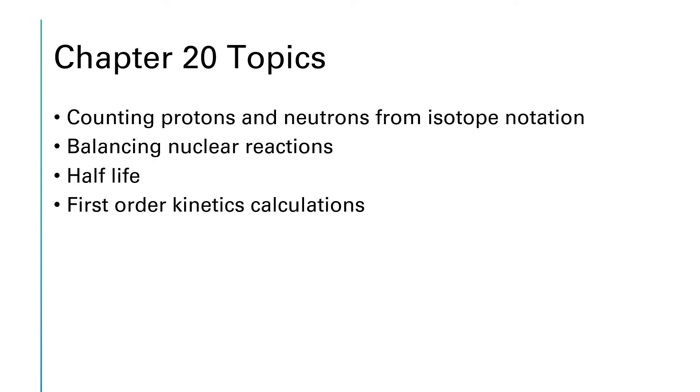As we wrap up chapter 14, I want to give just a tiny introduction to chapter 20, which is where we're going next. That may seem like a strange jump to go from 14 to 20, especially because chapter 20 is all about nuclear chemistry. But there's a direct connection between these two chapters, and that is that nuclear decay processes take place by first order kinetics.